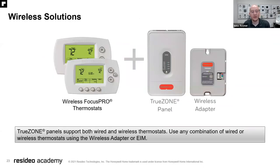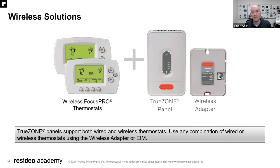A typical Redlink solution includes wireless Focus Pro thermostats, a true zone panel, and a wireless adapter. We can use the wireless adapter or we can use an equipment interface module — the EIM — and wire that to the thermostat side of the zone panel. We can mix and match: some thermostats can be wireless, some wired. You have the option to select which zones you want wired and which zones you want wireless.